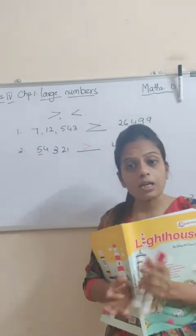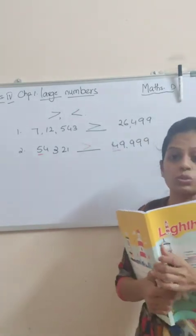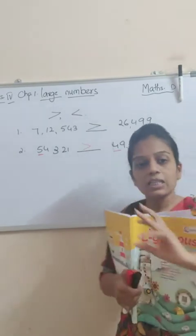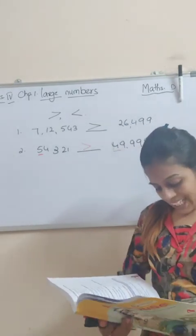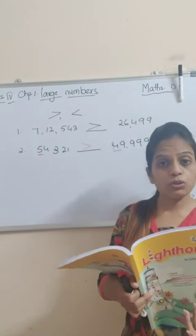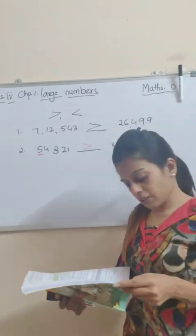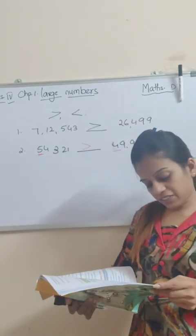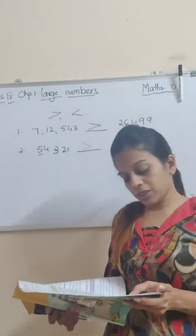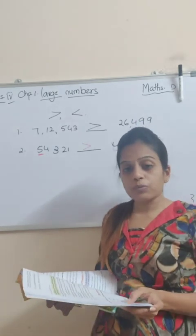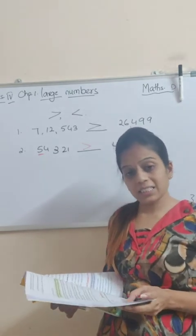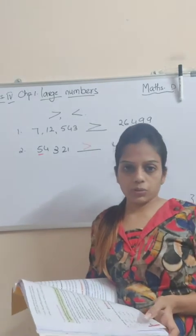Sirf aapko first wala number dekhna hai. Agar dono side same numbers rehenge — same numbers matlab same digit numbers. Agar yahan five digit number hai, yahan bhi five digit hai; yahan six hai, yahan bhi six hai — then you see the first number. At times it happens that both sides you have the first digit number the same. In that case, you will see the second digit number. See, in example five: 317581 and the other number is 328751. Here the first number is 3 and here also the first number is 3. Now we will leave that and move to the second number. Second number on the left-hand side is 1, on the right-hand side it is 2. Now compare which is the greater one and put the sign.